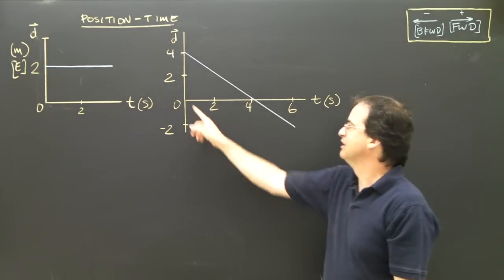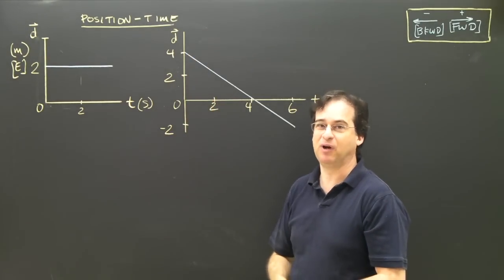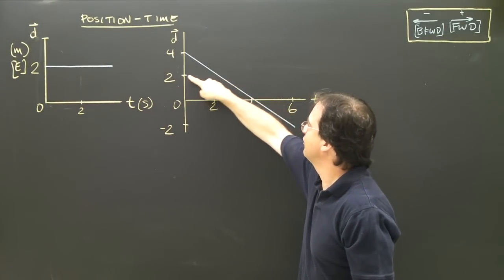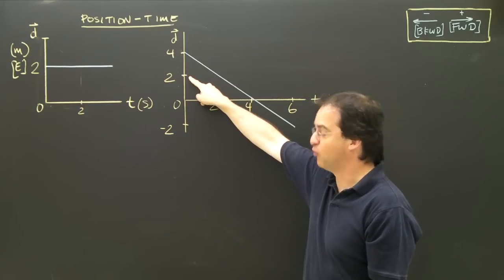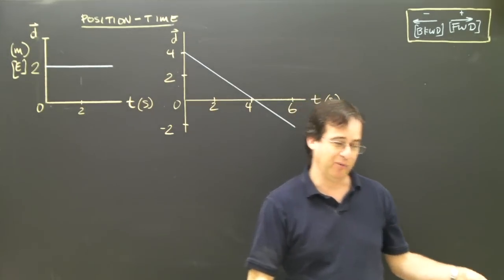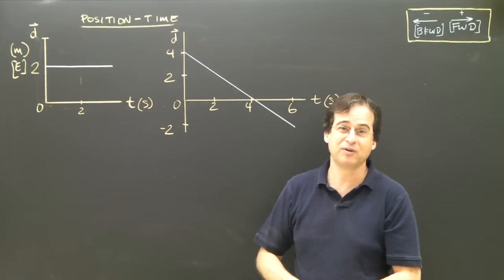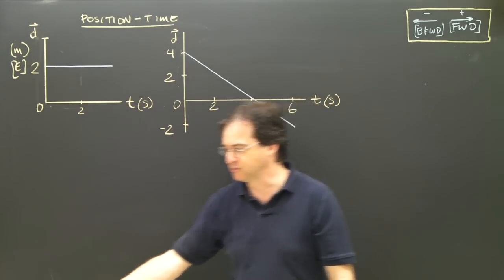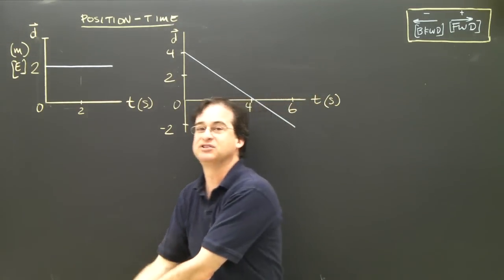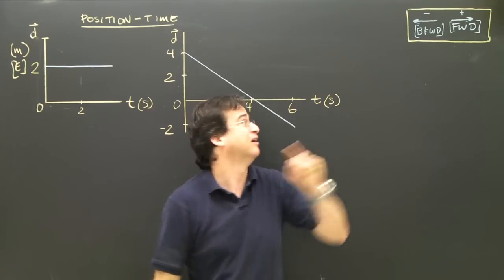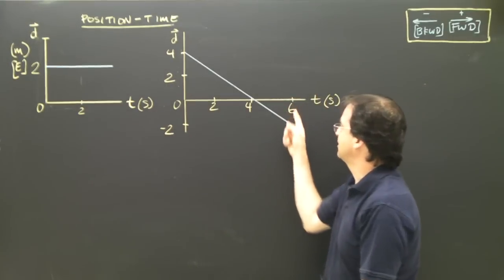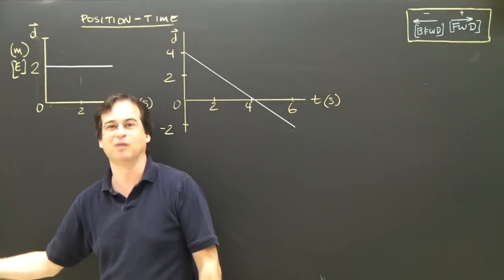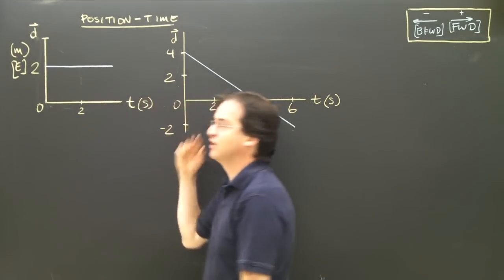Let's look at the numbers. At zero seconds, I'm at four meters — positive four meters forward, so I'm over here. At two seconds, I go up to the graph and I'm at two meters — still forward, positive two meters. I was at four meters, now I'm at two meters, so I'm moving backwards. At four seconds, I read across and I'm at zero meters. I was at four meters, then two meters, now zero — I'm moving backwards. At six seconds, I look at the graph and I'm at minus two meters, so I'm still going backwards. This is an object moving backwards.